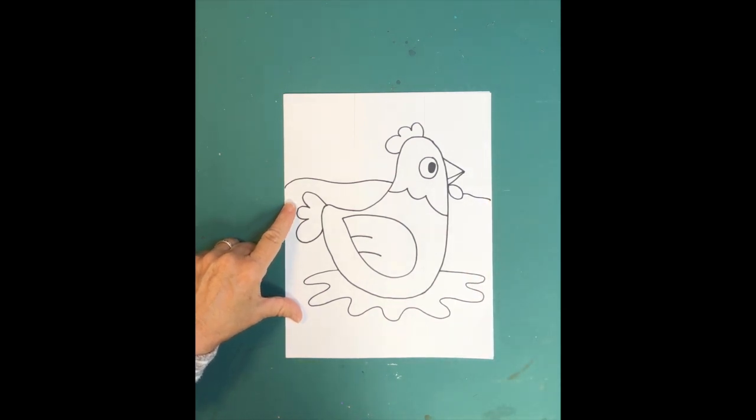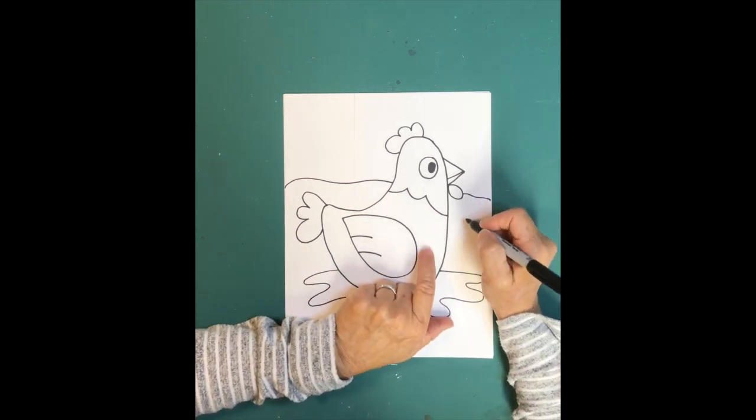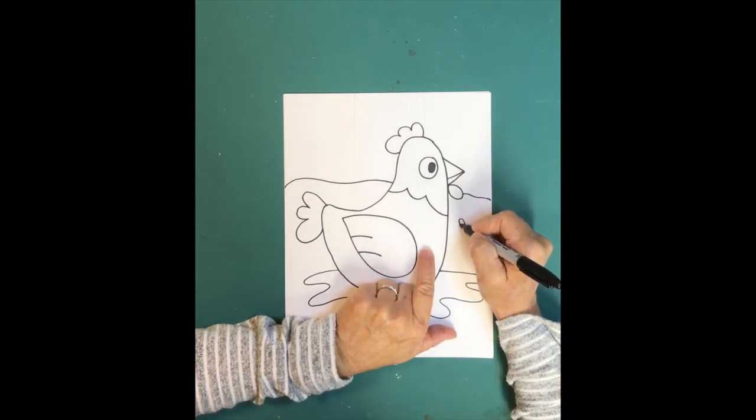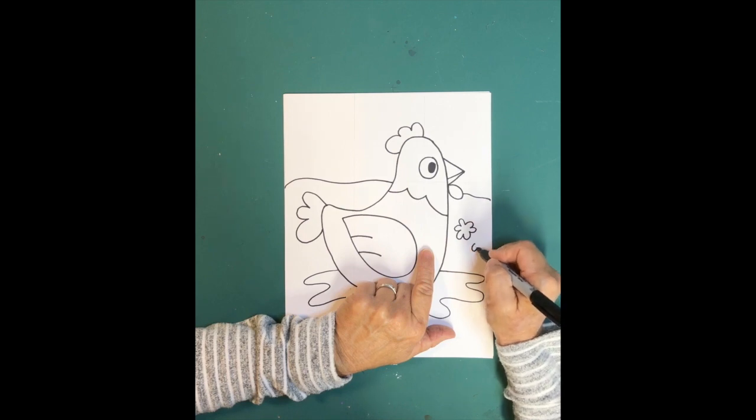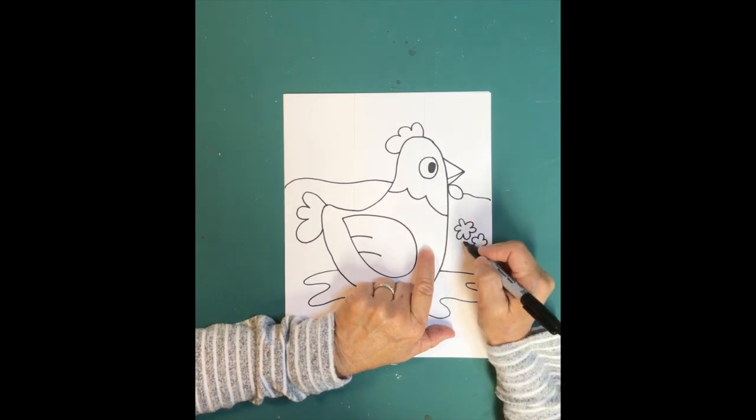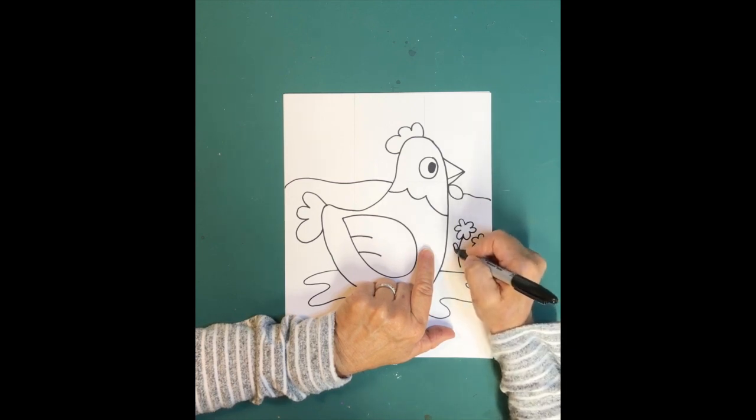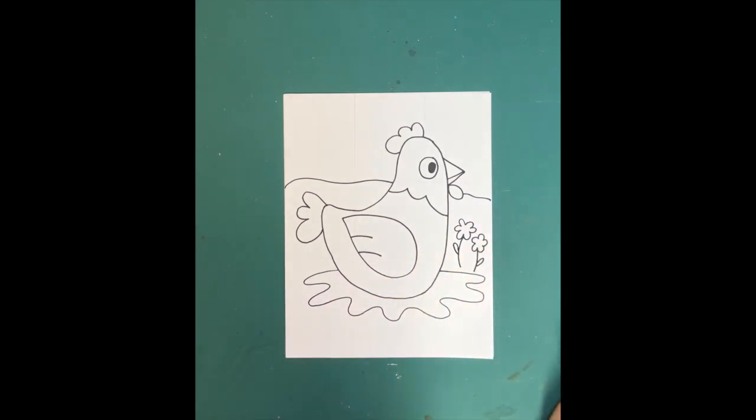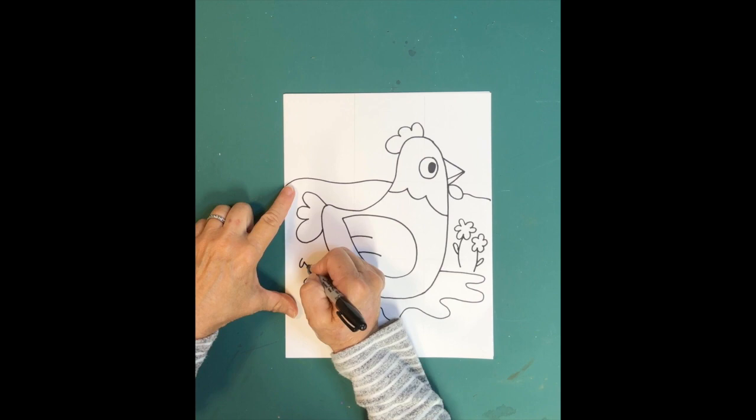I think it would be nice to put a couple flowers in her yard, so she has something pretty to look at. We'll put two flowers over here. Just draw some daisy type of flowers, or any kind of flowers that you like to draw. And the stems, and maybe some leaves. And maybe we'll put a flower over here too. One flower maybe over behind her.